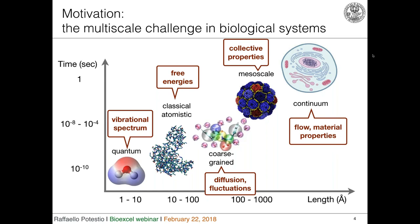The different levels at which we look determine both the properties we are interested in and the tools we must use. If I want to study the vibrational spectrum of a molecule, I must work at a very small length and time scale using methods that take into account explicit quantum properties. At the other end, if I want to look at large-scale conformational fluctuations of an entire virus, a fairly coarse-grained model is definitely more appropriate.